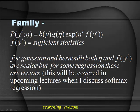The general form is: probability of y parameterized by eta equals b(y) times G(eta) times exponential of eta transpose f(y), where f(y) is the sufficient statistic. For Gaussian and Bernoulli, both eta and f(y) are scalar quantities.